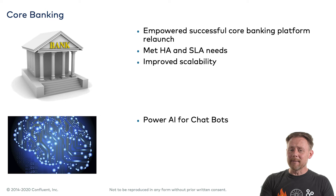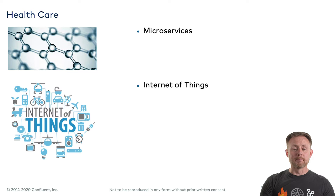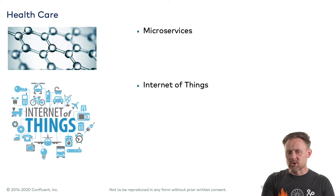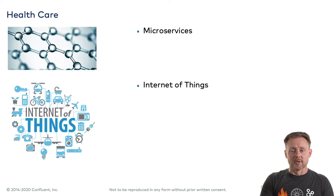Healthcare: a modern hospital is increasingly bristling with IoT devices — lots of medical devices connected to a network and reporting back. There have been some really cool Kafka use cases. For example, there was a hospital in Georgia that used Kafka and Confluent KSQL to process data from pediatric intracranial pressure monitors. A really neat use case — all Kafka-based because there are all these devices generating events and sending them somewhere to be processed and understood, creating information that helps healthcare professionals take better care of patients and lead to better health outcomes.